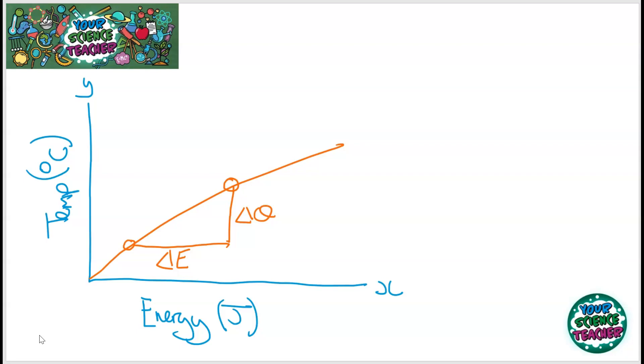And the dependent variable, the thing that's changing, is the temperature. So, as you can see, a straight line graph occurs. And you can get a value for the change in energy and the change in temperature.